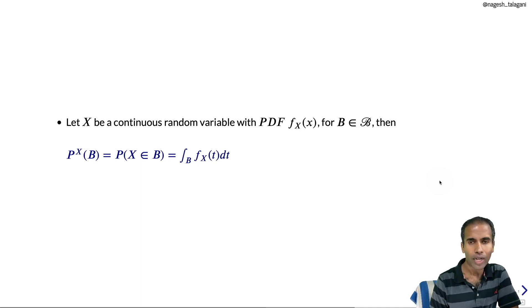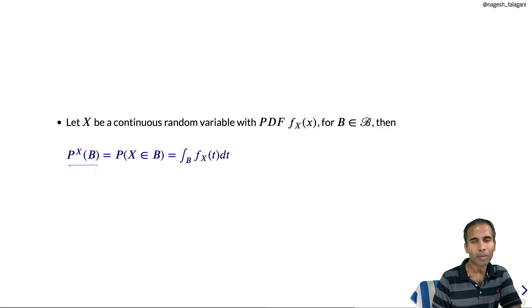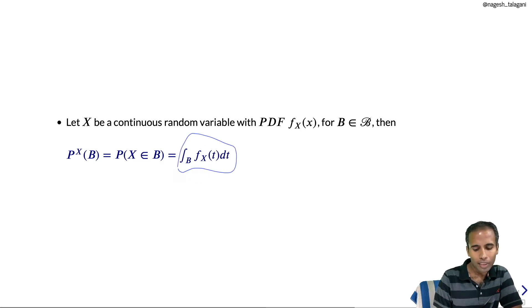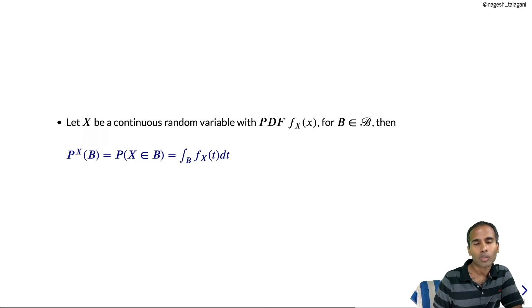For a continuous random variable X with PDF f and any Borel set B, the probability of X sitting in B can be obtained by integrating the PDF over B. This PDF completely determines the probability distribution of X. We can study the probability distribution of the continuous random variable X through the study of its PDF.